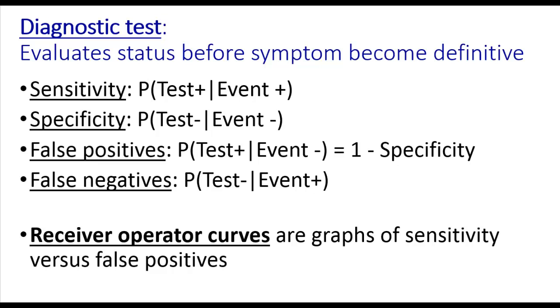And then of course there are false negatives — that you have a negative test even though the event is positive. A receiver operator curve is a graph of sensitivity versus false positives.